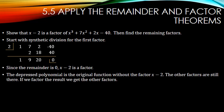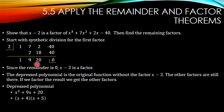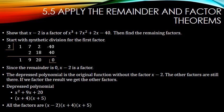Now look at the depressed polynomial — that's the original divided by x minus 2, meaning all other factors are still there. It was x cubed divided by x, so it's depressed to x squared: 1x squared plus 9x plus 20. It's quadratic, so we can factor it. What times what makes x squared? x and x. What times what makes 20? 4 and 5. Outers are 5x, inners are 4x — 5x plus 4x makes 9x. So all our factors are x minus 2, times x plus 4, times x plus 5.